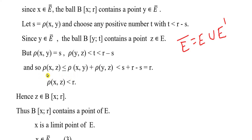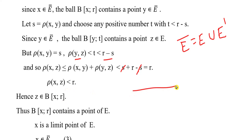By the triangle inequality in our metric space: ρ(x, z) ≤ ρ(x, y) + ρ(y, z), which is less than s + t, and since t < r minus s, this gives ρ(x, z) < r. So z is within distance r from x.